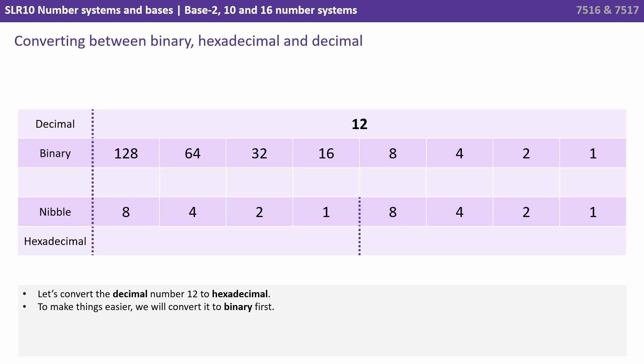So let's convert the decimal number 12 into hexadecimal. To make things easier, we're going to convert it to binary first. So remember a 12 would be a 1 in an 8 column and a 1 in a 4 column. Now we can pad the other numbers out with 0 in the binary column. Now we can move on to the hex.